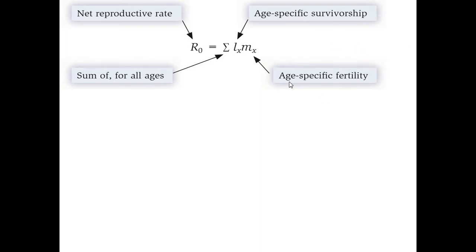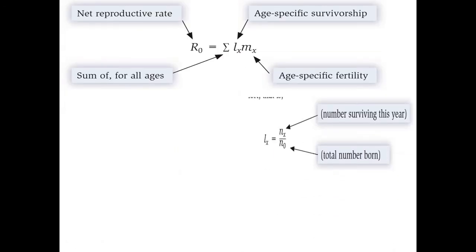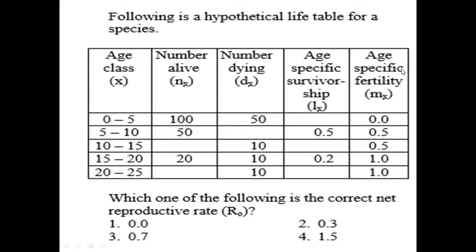In this formula, Lx is age-specific survivorship and Mx is age-specific fertility. Looking at the table, we can see that the age-specific survivorship is not given for the age groups 0–5, 10–15, and 20–25. So we need to calculate the age-specific survivorship for these three age groups. The formula for Lx is: Lx = Nx / N₀, where Nx is the number surviving at a particular age group and N₀ is the total number born.